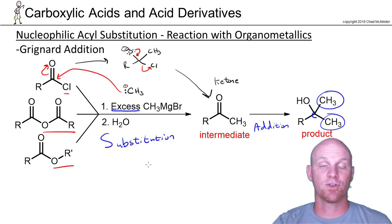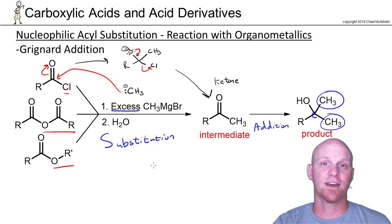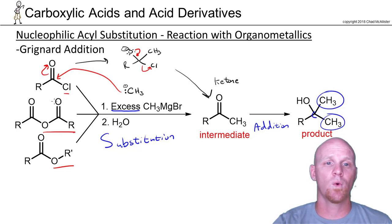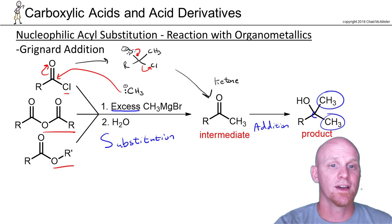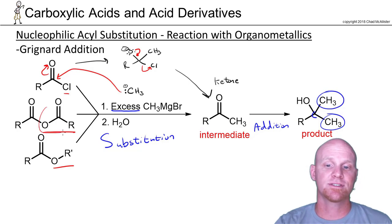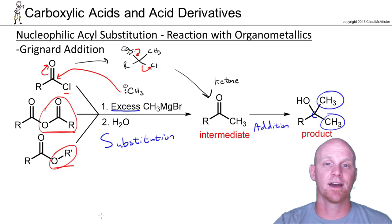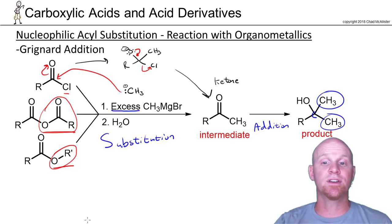If you want to add only one equivalent, you should change the reagent. The reaction works exactly the same way with the anhydride and the ester — the only difference is the leaving group: instead of chlorine, you have a carboxylate or an alkoxide. Mechanistically the reaction is no different except for the leaving group.